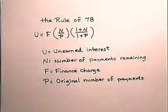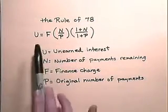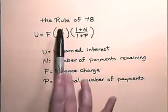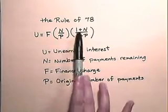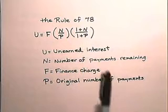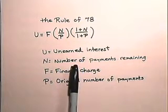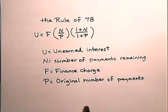Now let's look at the rule of 78 and use the rule of 78 when prepaying a loan. The rule of 78 says that unearned interest equals the finance charge times N divided by P multiplied by 1 plus N divided by 1 plus P, where N is the number of payments remaining, and P is the original number of payments.